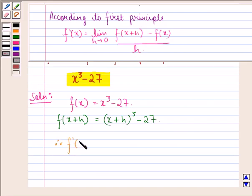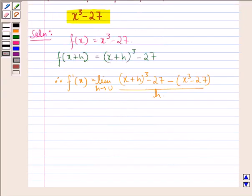Therefore f dash x will be limit h approaching 0, function at x plus h is x plus h the whole cube minus 27, minus function at x is x cube minus 27, divided by h. This will be equal to limit h approaching 0. Now x plus h the whole cube is x cube plus 3x square h plus 3x h square plus h cube minus 27.